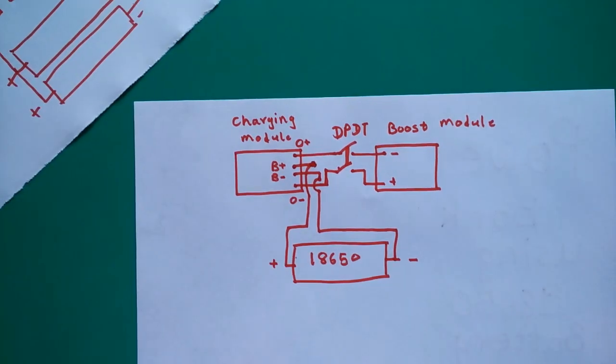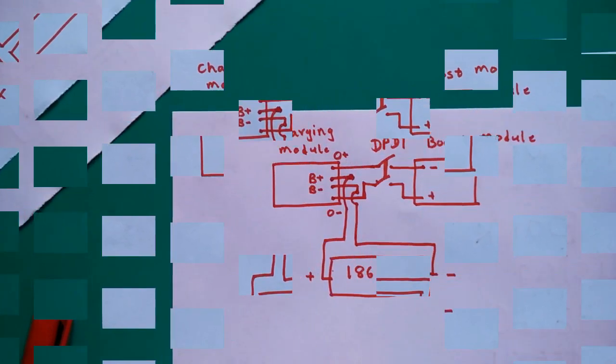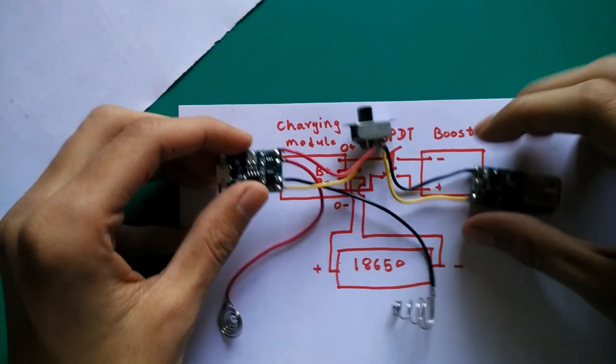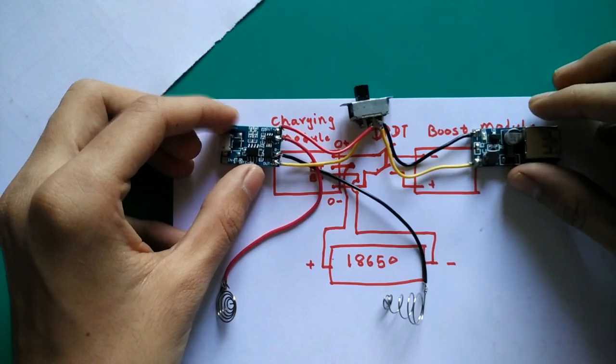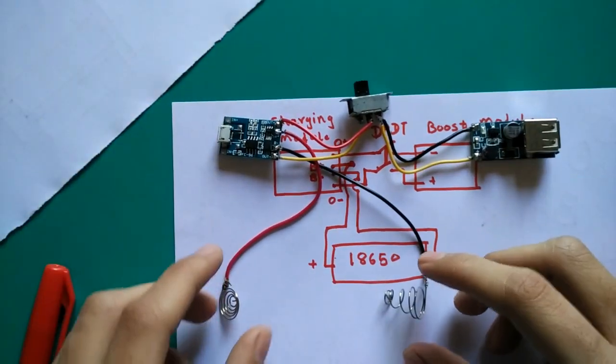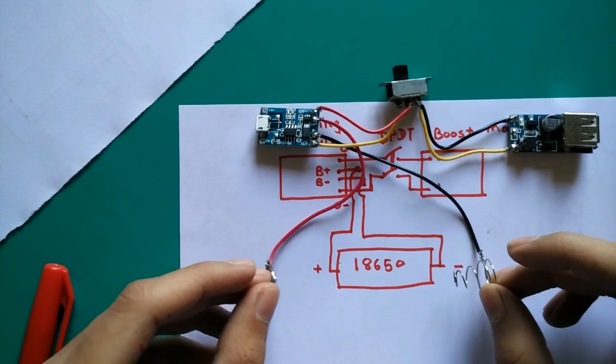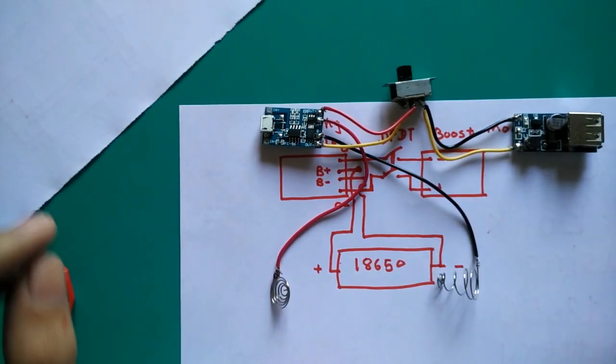So now I am going to make connections. So this is how it looks like after soldering - this is charging module, this is boost module, and I found this connector from an old remote control.